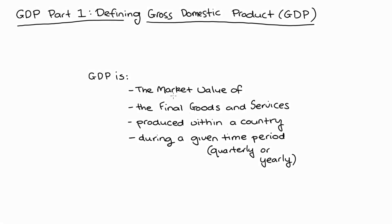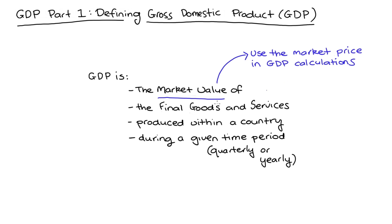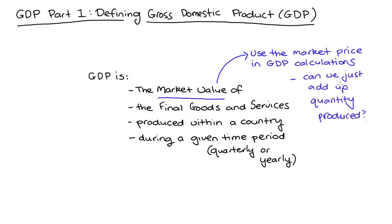Starting from the top, when we say 'market value,' we mean that when we calculate GDP, we're going to use the price that the good is sold at in the market to essentially weight the amount of goods and services that we produce. One way to think about why we do this is to ask: can we simply add up how many things our economy produces — the quantity — and take this as an indication of how big or small our economy is? Actually we can't do this; this will lead to weird results.